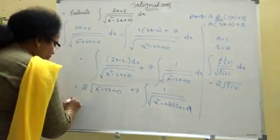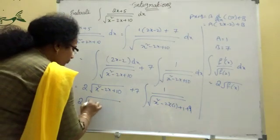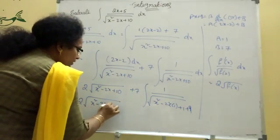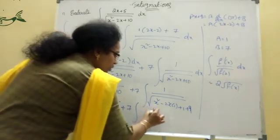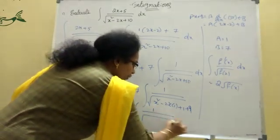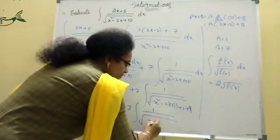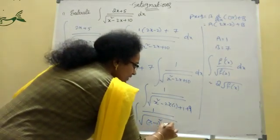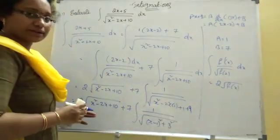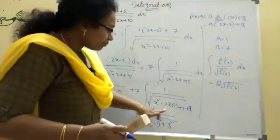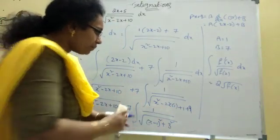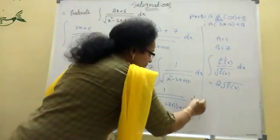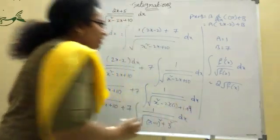So, next step. 2 into root of x square minus 2x plus 10 plus 7 of integration of 1 by root of x minus 1 whole square plus 3 square. A square plus B square minus 2AB, x minus 1 whole square plus 9, that is 3 square. The formula, dx is there. Integration, dx is there.